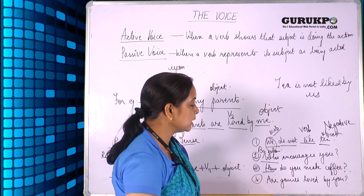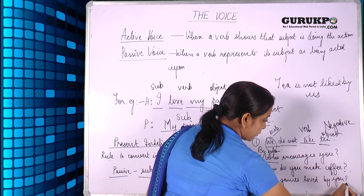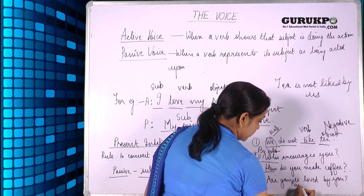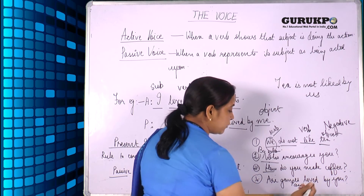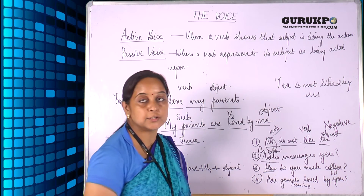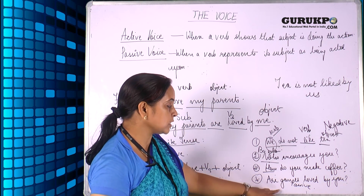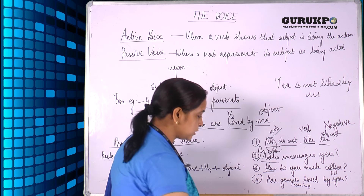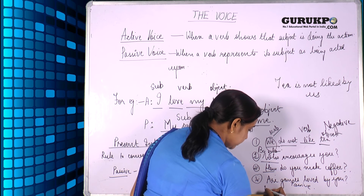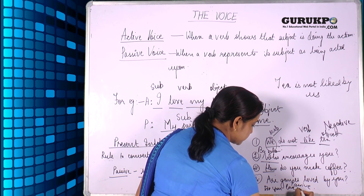The last sentence is 'Are games loved by you?' — this is already in the passive form. Now we have to convert it into the active form. 'Are games loved by you?' becomes 'Do you love games?'